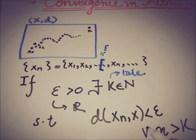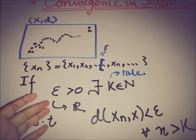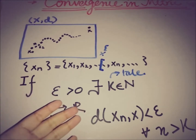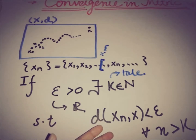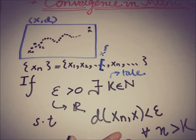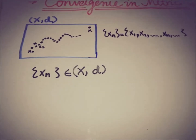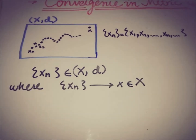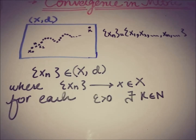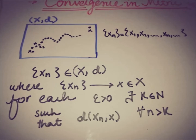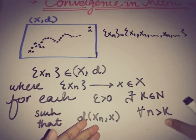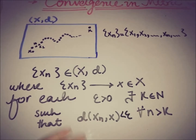So for all n greater than k, a sequence xn converges to some point x in a metric space if we have a real number epsilon greater than zero and a tail represented by k belonging to the natural numbers, such that the metric — the distance between any element within the tail and the limit — is smaller than epsilon.